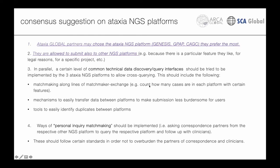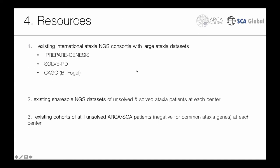The resources for our working group are already quite rich. We have three existing international NGS consortia with large ataxia databases: PREPARE, GENESIS SOLVERS, and COGC. In addition, we have existing but not-yet-shared NGS data sets of solved and unsolved ataxia patients located at centers around the world. The third resource is the cohorts of still-unsolved ARCA and SCAR patients who are negative for common ataxia genes.